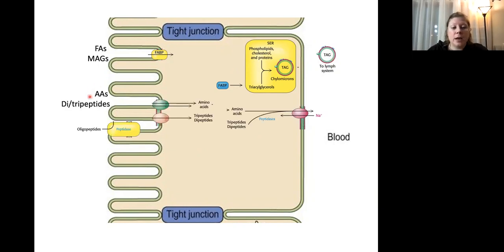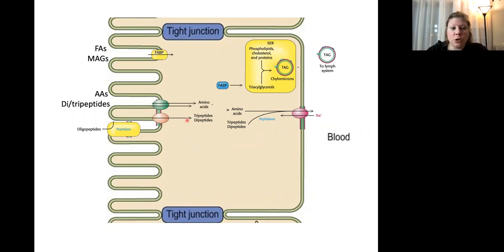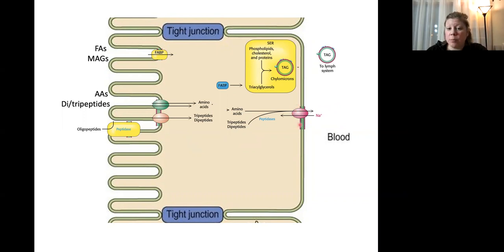Now let's talk about amino acids and di- or tripeptides. If we have a short peptide that's not yet a single amino acid, an oligopeptide like a dipeptide or tripeptide can be broken down by peptidase—a membrane-associated enzyme. Amino acids can be transported inside our cells using transporters, and there are also di- and tripeptide transporters. We need proteins broken down into pretty small components—one or two amino acids—to get them inside the cell.